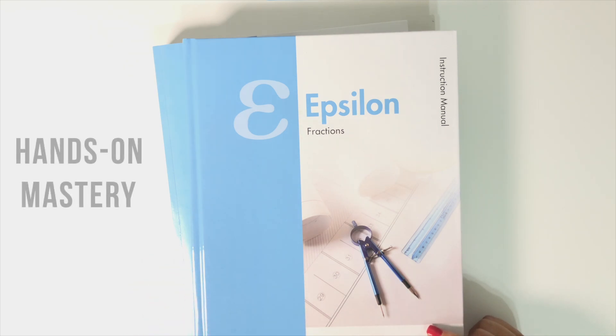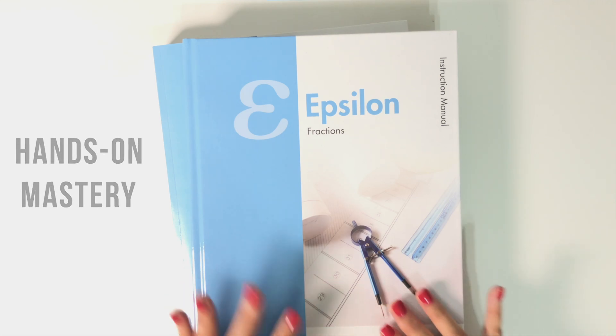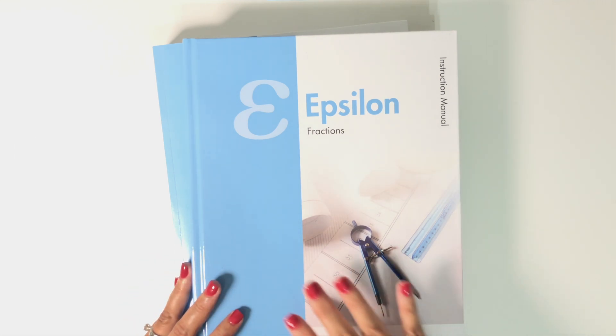Math-U-See is a hands-on mastery based math curriculum. I have used it in my homeschool all four years that we've homeschooled so far. It's important to know that it's mastery based because that means each level is going to generally cover one main topic.